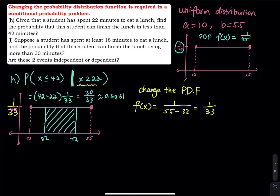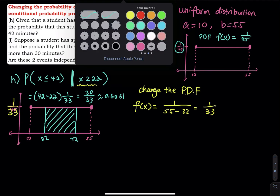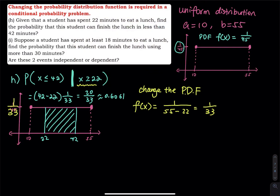In the next part, we solve another conditional probability. Suppose the student has spent at least 18 minutes eating lunch — find the probability that this student can finish lunch using more than 30 minutes. Part I is: P(x > 30 | x ≥ 18).